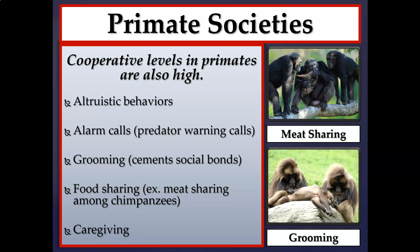One example of altruistic behavior is predator alarm calls. If one vervet monkey lets out an alarm call signaling an aerial predator like a hawk or eagle, the entire group knows to move down in the canopy to avoid it. But the primate giving the alarm call is putting itself in danger by calling attention to itself while allowing group mates to avoid being eaten.